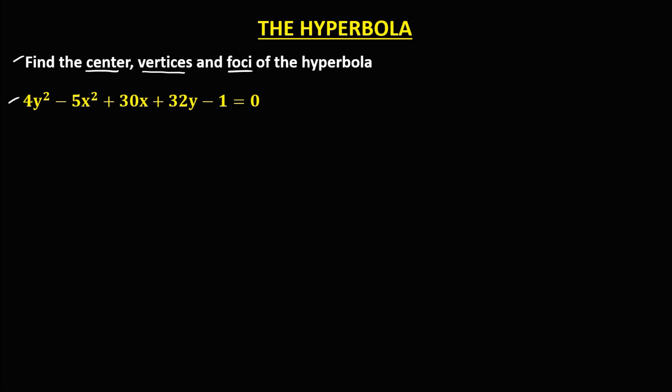Take note that for the equation of a hyperbola, one of the variables with exponent 2 is negative. For this given, x squared is negative. So first, we need to rewrite this equation in standard form. To do that, we need to group all x and group all y. But take note that the first group must be the positive variable. Since y squared is positive, the first group is y.